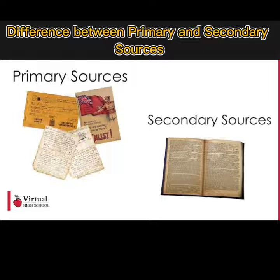A primary source is an original, first-hand record, account, or artifact that has survived from the past. It has direct involvement with the event being investigated. Due to this direct physical relationship, the possibility of error is very little, and researchers are reliable on primary sources. A secondary source is an account of the past created after the event and derived from primary sources. It has no direct involvement with the event being investigated, and it is very possible that secondary sources contain errors due to passing of information from one source to another. Secondary sources are totally dependent upon primary sources, and researchers do not rely on secondary sources.